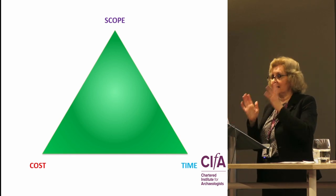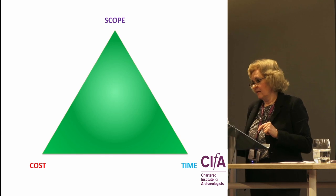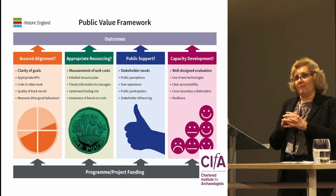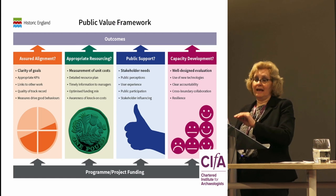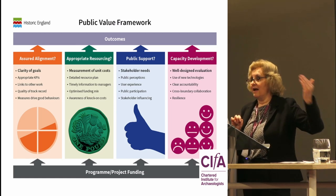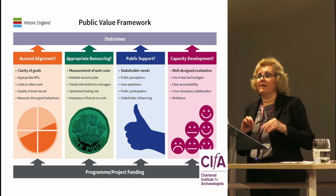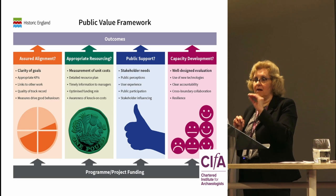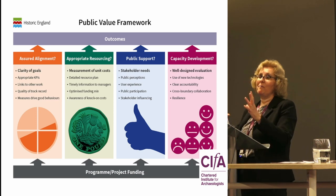What the public value framework does is look at what you're putting in — the program, project, and funding — and what you are getting out at the end: the outputs and the outcomes. It's based on what we call these four pillars.